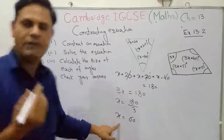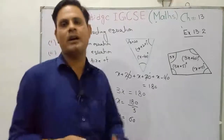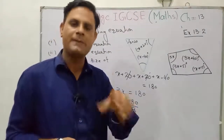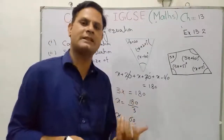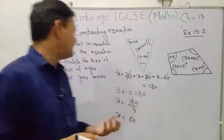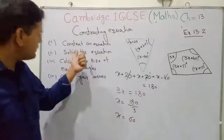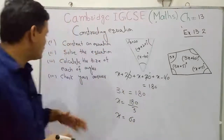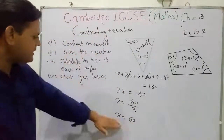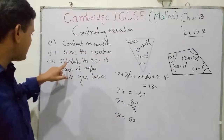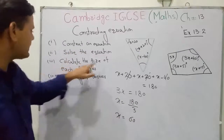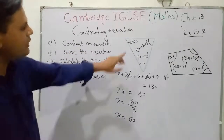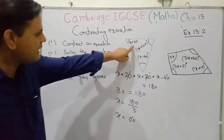When you solve for the value of x or the unknown quantity in the equation, that is called the solution of the equation. So part two — solve the equation — is done. Now part three: calculate the size of each angle. Here is the first angle.